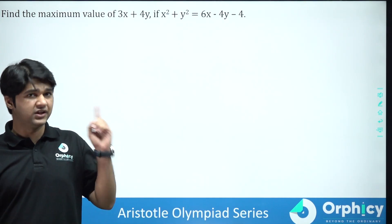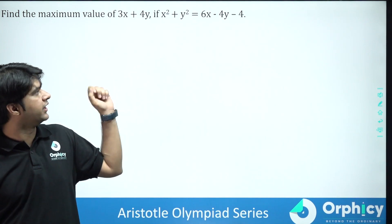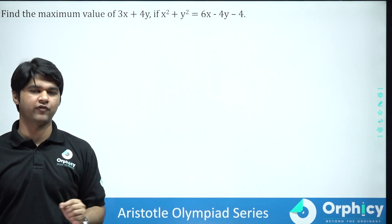Find the maximum value of 3x plus 4y if we are given that x square plus y square is equal to 6x minus 4y minus 4.